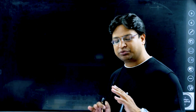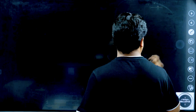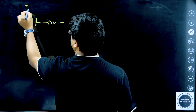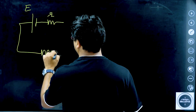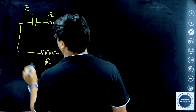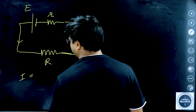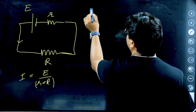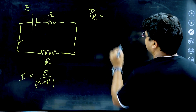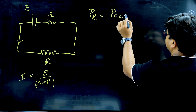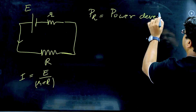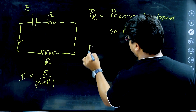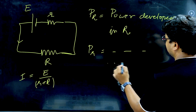This is going to be a short video and I'm going to cover this very quickly. Suppose I have a circuit in which there is a battery, there is some internal resistance (small r), and there is some external resistance (capital R). The current in this circuit is going to be E divided by (r + R). Power developed in resistance R is P_R, and power developed in small r — the internal resistance — is P_r.